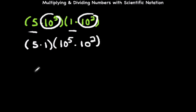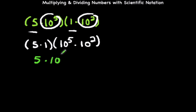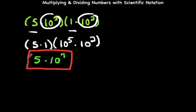So we're going to solve this. 5 times 1 is simply 5. The bases are alike, so we follow the rules of multiplying exponential expressions — we keep the base and add the exponents. This gives us 5 times 10 to the seventh power. That is our final answer because the result of step one is not greater than 10, so no conversion is needed.